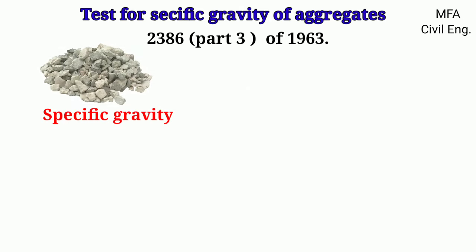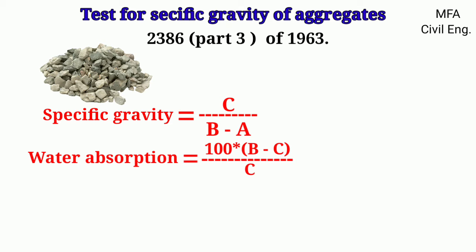Then the specific gravity of the aggregate can be determined by the relation: specific gravity equals C divided by B minus A. And the water absorption of the aggregate can be determined by the relation: water absorption equals 100 multiplied by B minus C, whole divided by C.